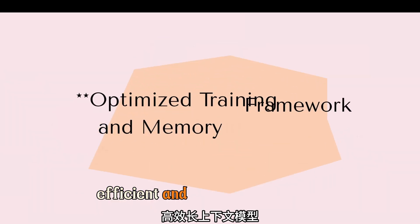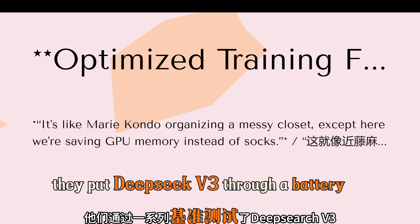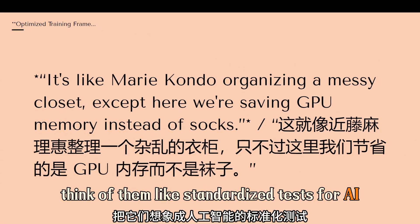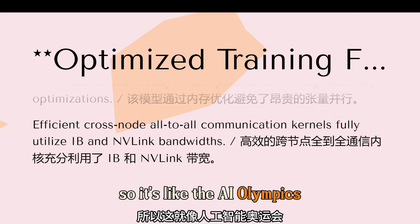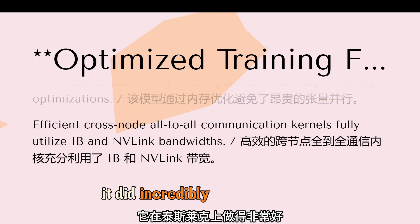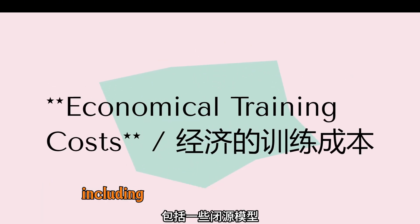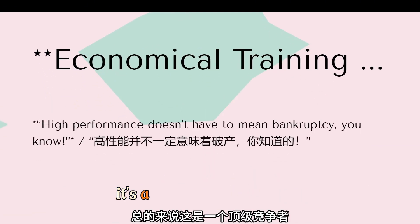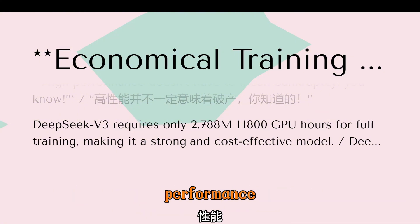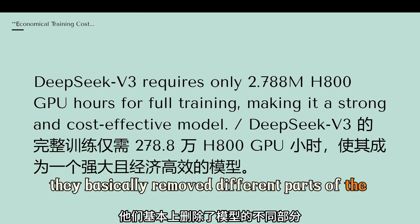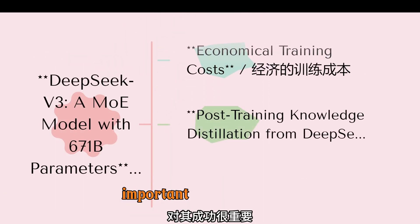They put DeepSeek V3 through a battery of benchmarks — standardized tests for AI covering everything from code generation to math problem solving to standardized exams. It did incredibly well on tests like HumanEval for code generation and GSM-8K for math, even outperforming some closed source models. They also did ablation studies, removing different parts of the model to see how it affected results. They found that things like multi-token prediction and the load balancing strategy were really important for its success.